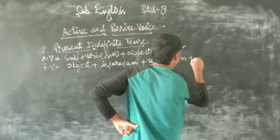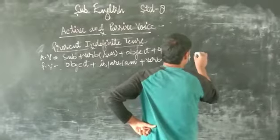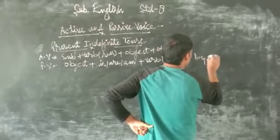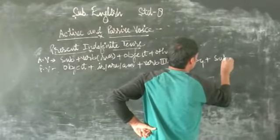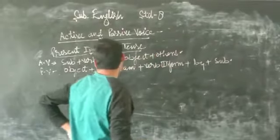After third form, plus by, plus subject. This is the structure for passive voice. For example...